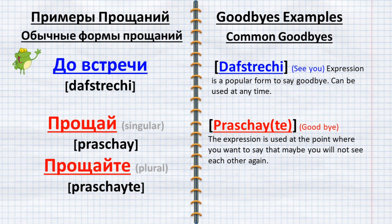And here is an example. If you broke up with your boyfriend or girlfriend, you may say Прощай моя дорогая or Прощай мой дорогой. It means goodbye my dear.